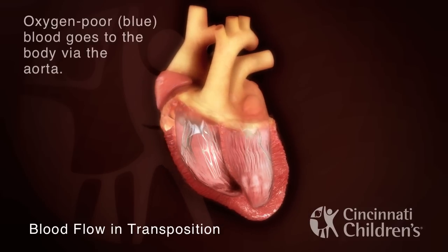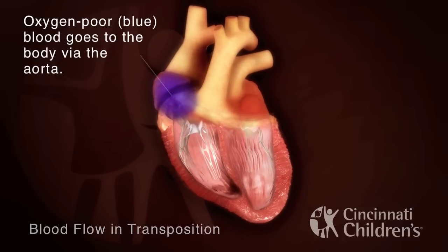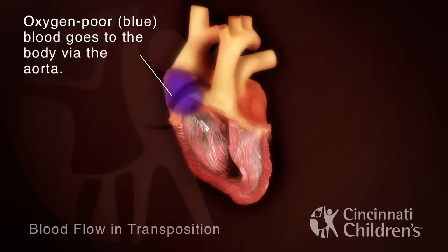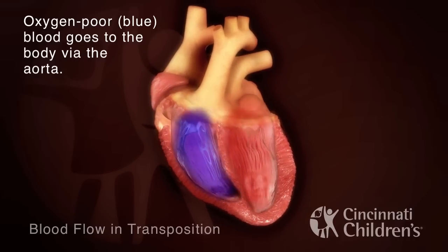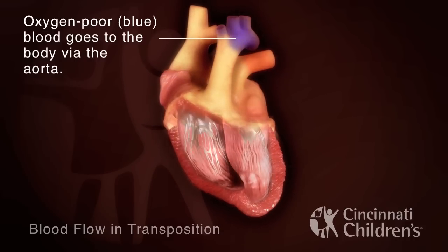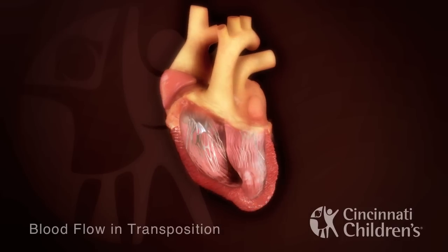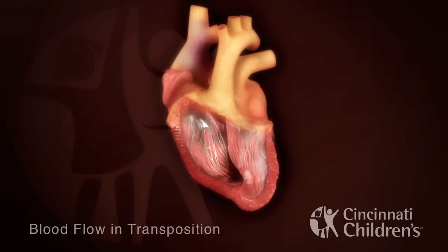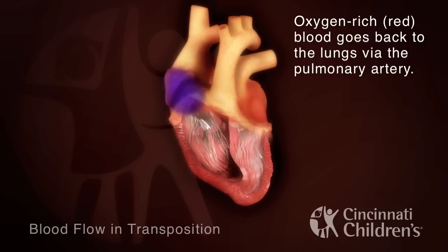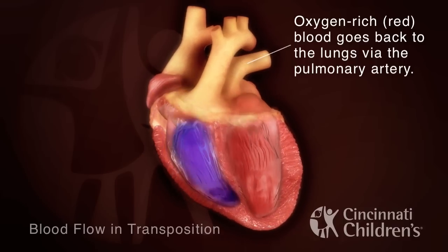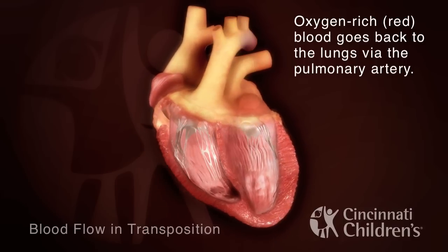In transposition, blue oxygen-poor blood returns to the body through the right atrium, enters the right ventricle, and goes to the body via the aorta, bypassing the lungs. Red oxygen-rich blood is pumped back into the lungs via the pulmonary artery without going to the body.